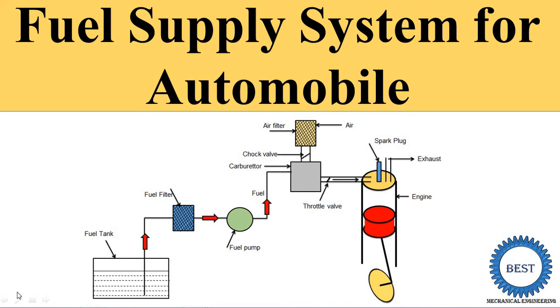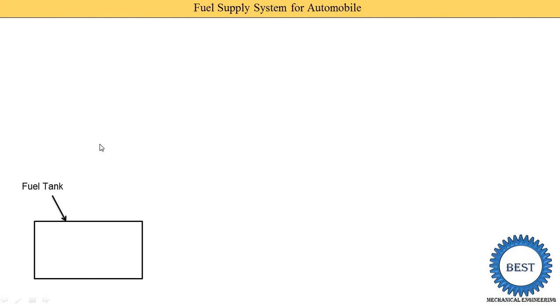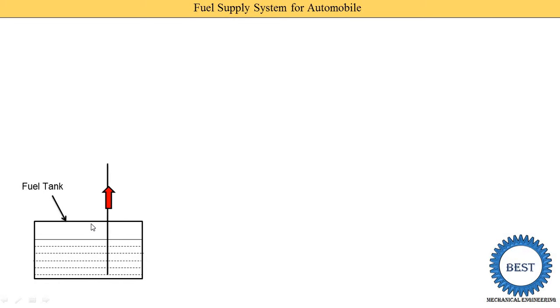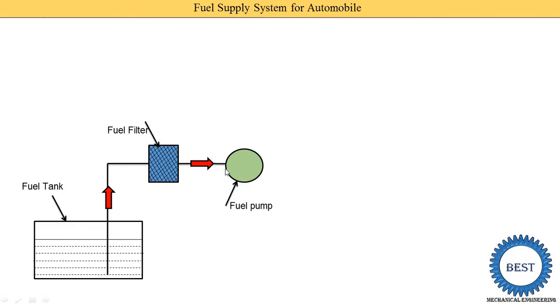In this video I discuss the fuel supply system for automobiles — either for petrol engines or diesel engines. First we understand the various components of a fuel supply system for automobiles, then we understand its working. The first component is the fuel tank in which the fuel is filled. From the fuel tank, fuel is supplied to the fuel filters, then fuel is supplied to the fuel pump.